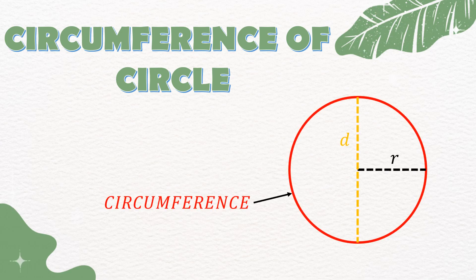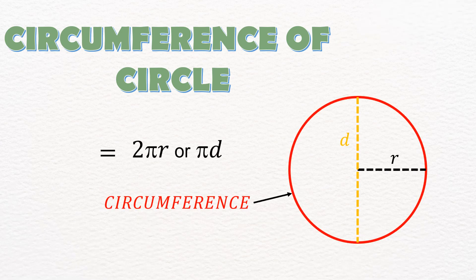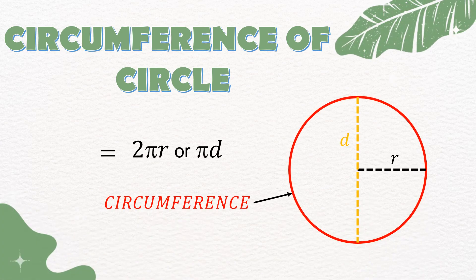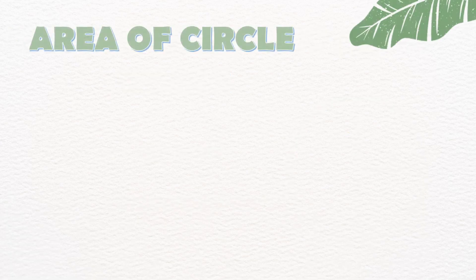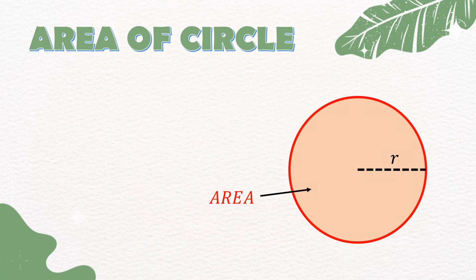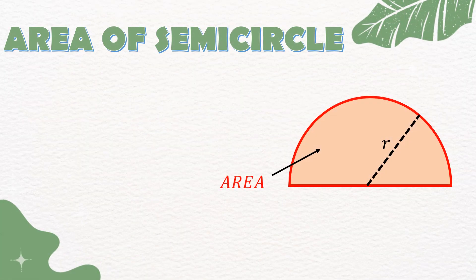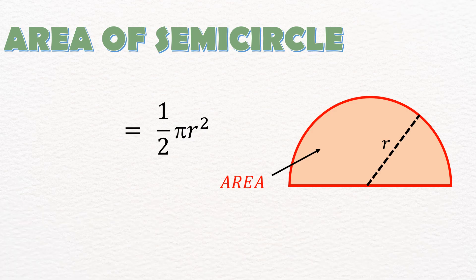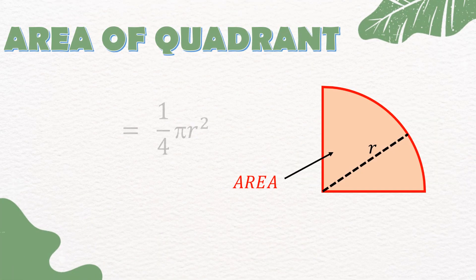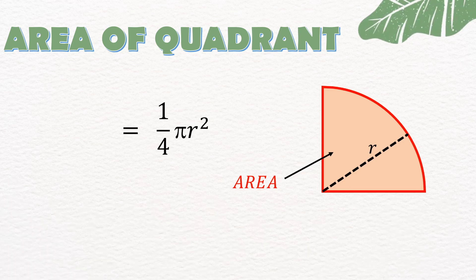Circumference of circle is equal to 2πr or πd. Area of circle is equal to πr². Area of semicircle is equal to (1/2)πr². Area of quadrant is equal to (1/4)πr².